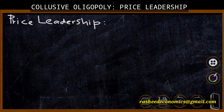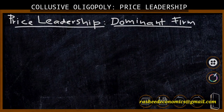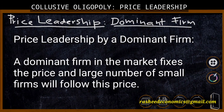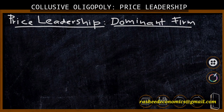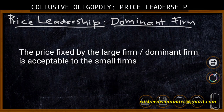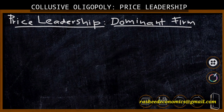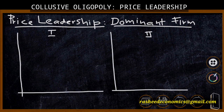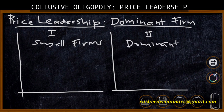Now we move to price leadership by a dominant firm. Under dominant firm price leadership, the large or dominant firm in the market fixes the price, and a large number of small-sized firms will follow. The price fixed by the dominant firm is acceptable to all other small firms. To analyze this, we divide the market into two segments: Segment 1 shows the demand and supply conditions of small firms, and Segment 2 shows the conditions of the dominant firm.